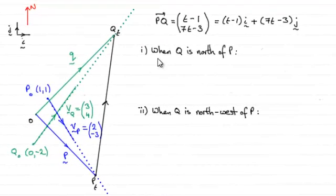Now for part C1, we need to find the time when Q is north of P. And then in part 2, we need to find when Q is northwest of P. This is quite tricky. But first, we'll do part 1, when Q is north of P.